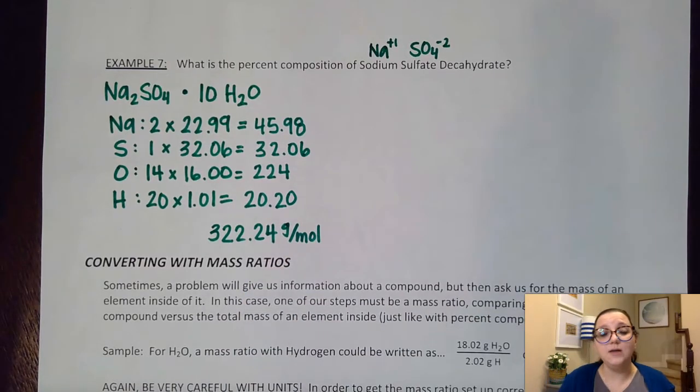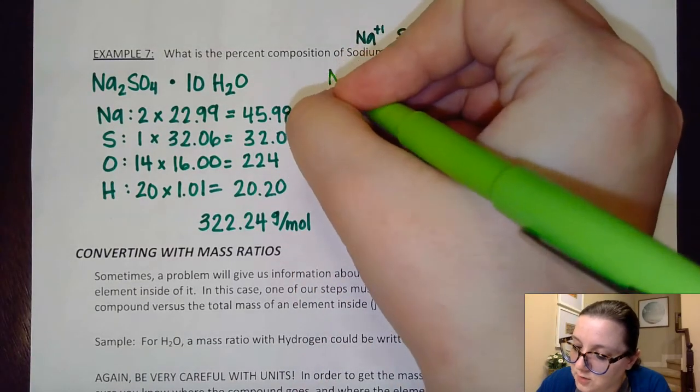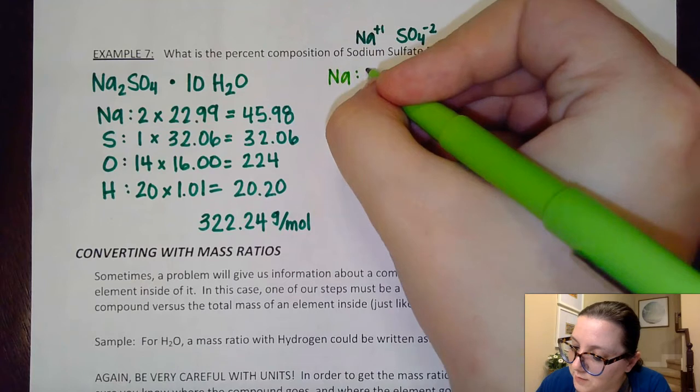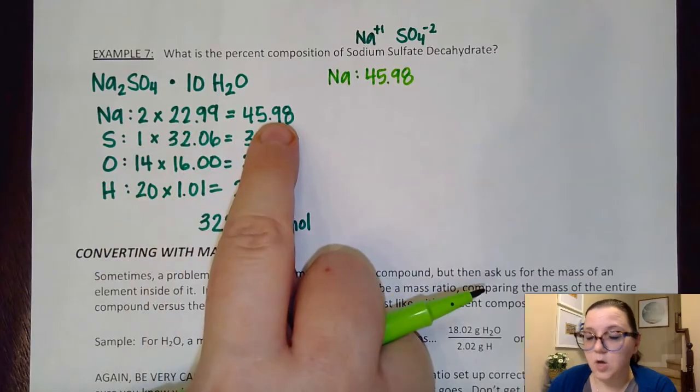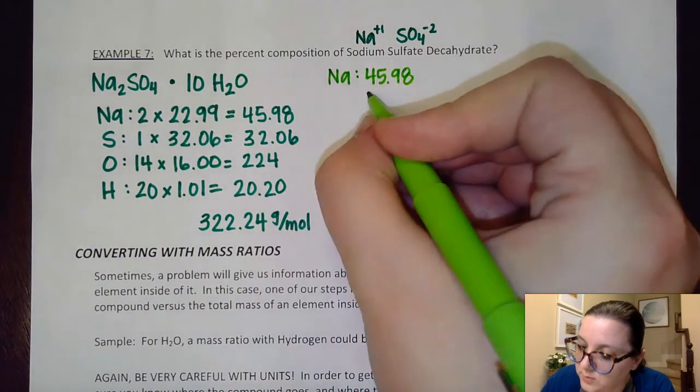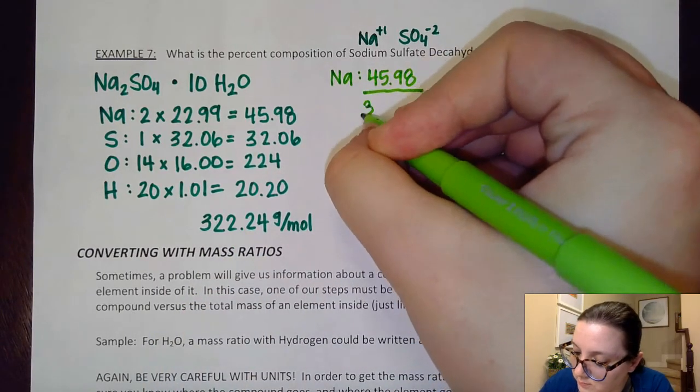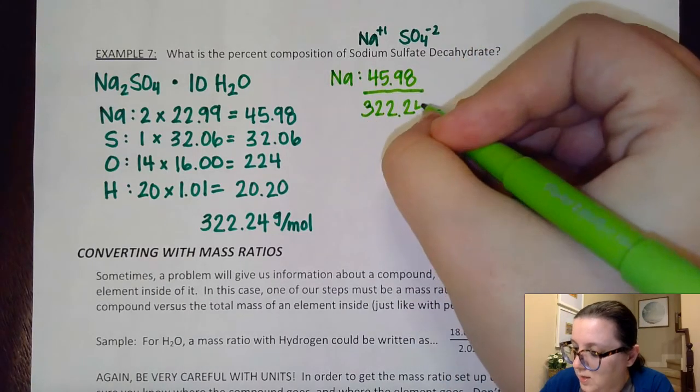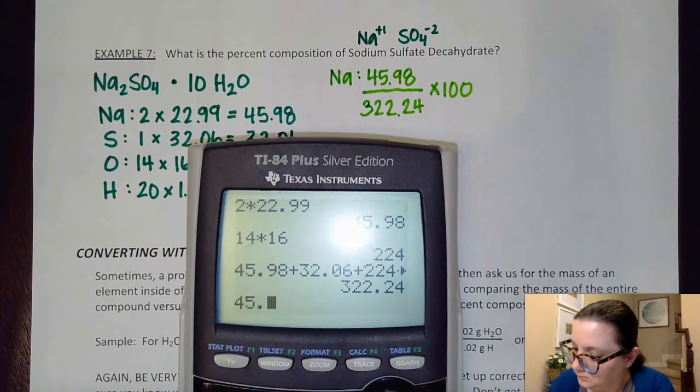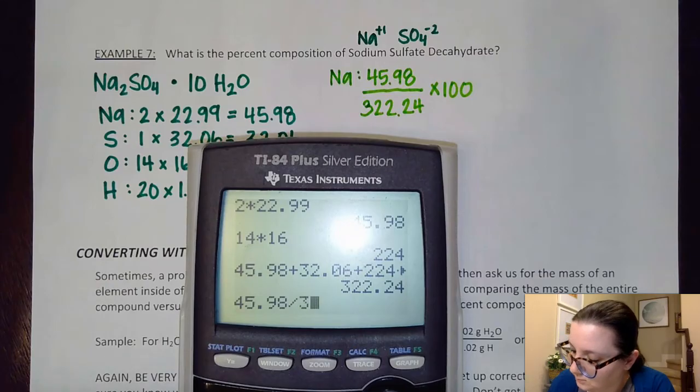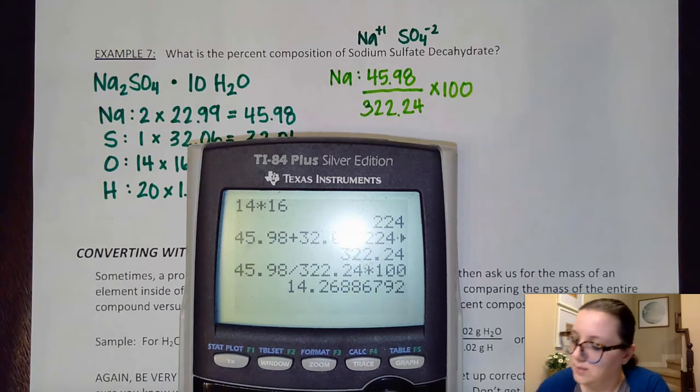All right. So now we're ready to calculate the percentage of each of those elements. So just like before, I would first start off with the sodium. I'd have 45.98, the total of all the sodiums together, over the total molar mass. So again, the part of the element over the total molar mass of all the elements together. And then multiply by 100 to get it into a percentage. And so we get right around 14.27% there.